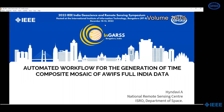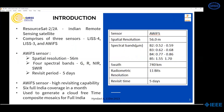I am Haimdali, working as Scientist Engineer SD at National Remote Sensing Centre, ISRO Department of Space. The topic is Automated Workflow for the Generation of Time Composite Mosaic of AWIFS Full India Data. We used ResourceSat-2/2A satellite AWIFS sensor data for this work. ResourceSat-2/2A is an Indian Remote Sensing Satellite comprising three sensors: LISS3, LISS4, and AWIFS. AWIFS sensor has four spectral bands — green, red, near-infrared, and short-wave-infrared — with 56 meters of spatial resolution and a revisit period of five days, enabling six mosaics per month, out of which a single time composite mosaic is generated.